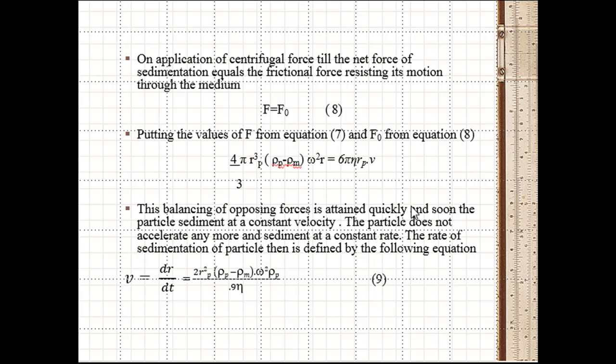The balancing of opposing forces is attained quickly and soon the particles sediment at a constant velocity. The particle does not accelerate anymore and sediments at a constant rate. The rate of sedimentation of a particle is defined by: sedimentation velocity = dr/dt = 2Rₚ²(ρₚ - ρₘ)ω²r / (9η). This is how we can calculate the sedimentation velocity if we know the radius of the particle, density of the particle, density of the medium, ω, and viscosity of the medium.